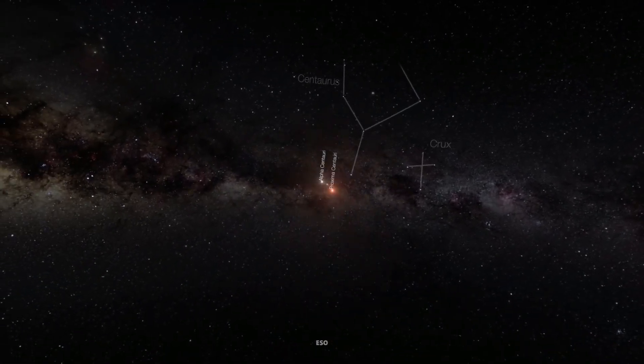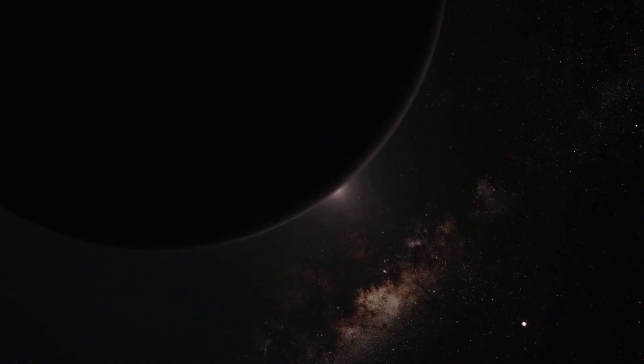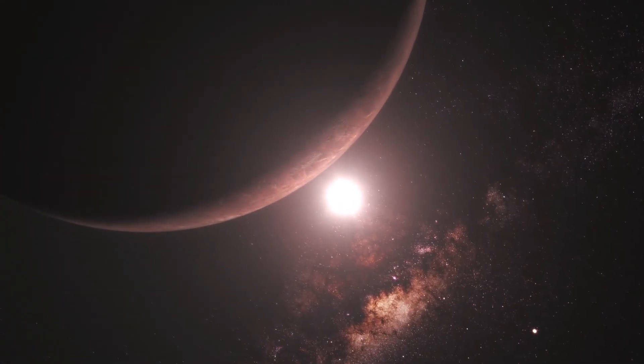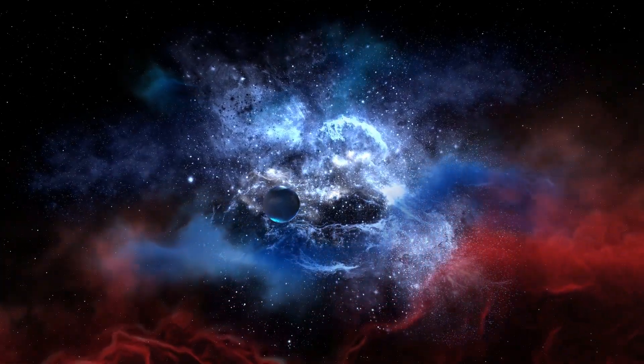So, Proxima Centauri b is the exoplanet that's been causing quite a buzz in the astronomical community. It's orbiting Proxima Centauri, our closest stellar neighbor. Picture this, it's just over four light years away. Yeah, space is mind-bogglingly vast.